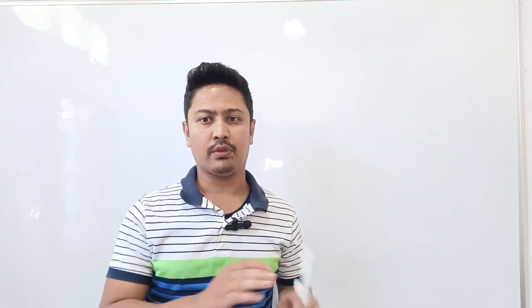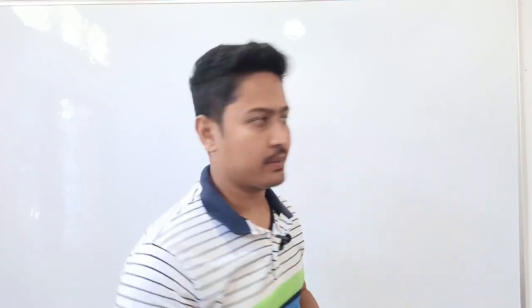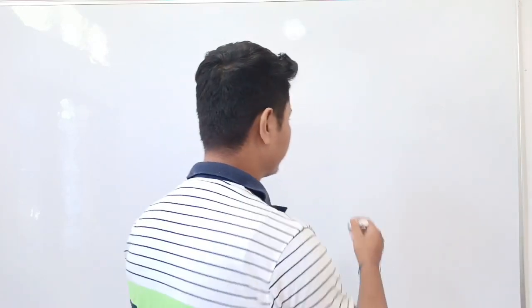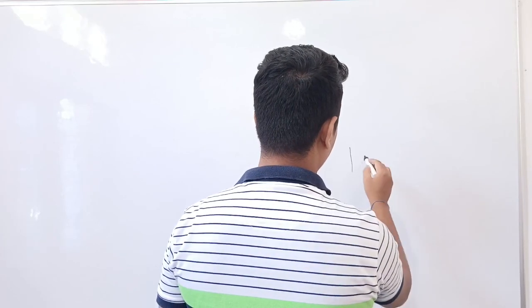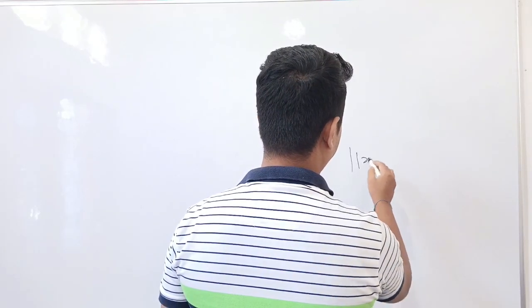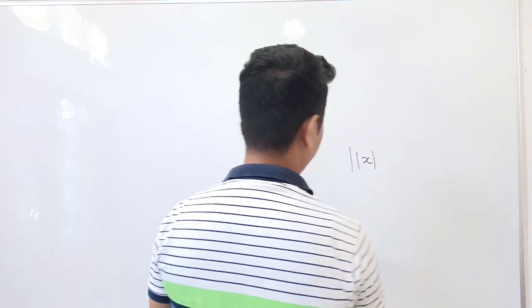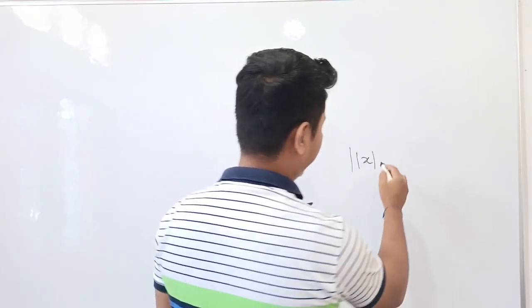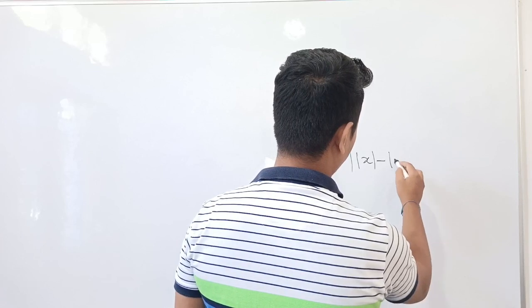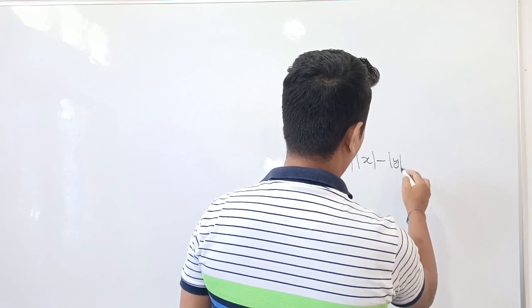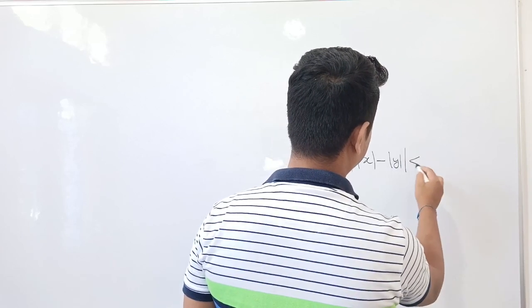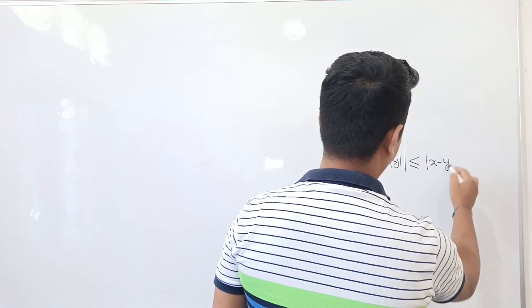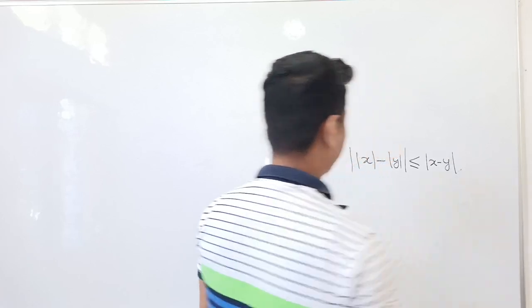You have to know this inequality prior to this proof. The inequality is: mod of mod of x minus mod of y is less than or equal to mod of x minus y.